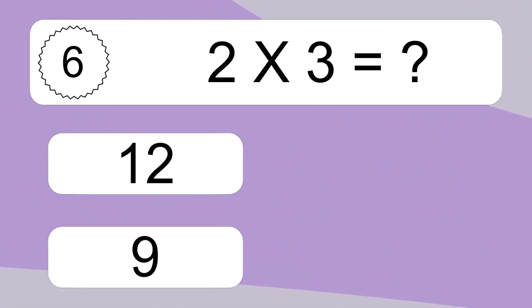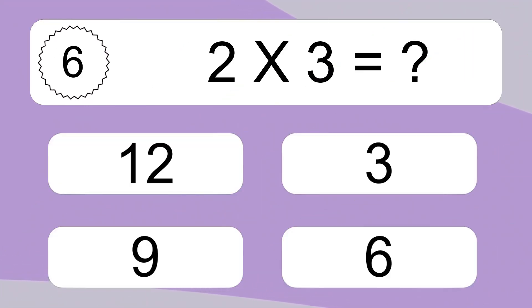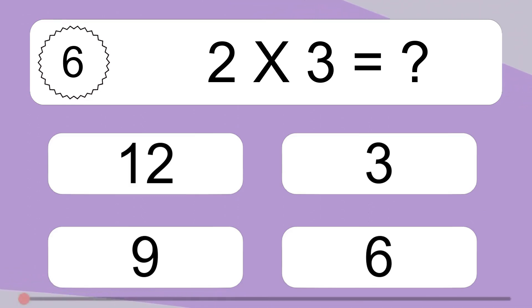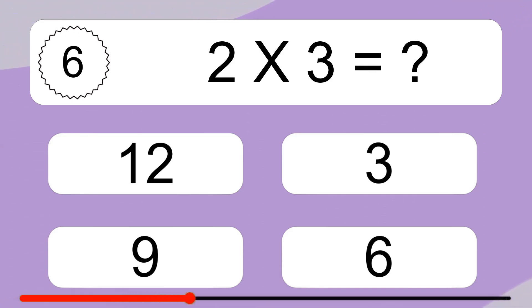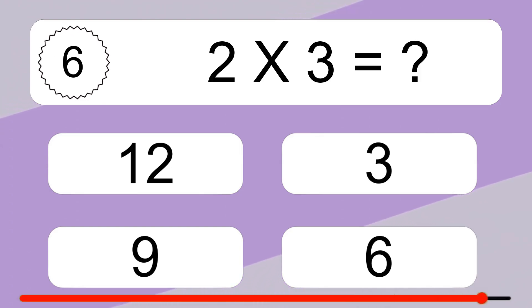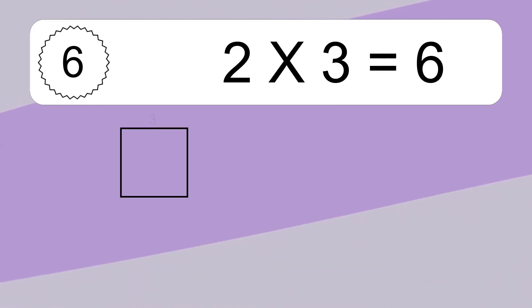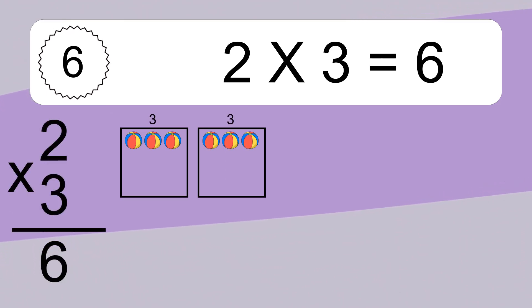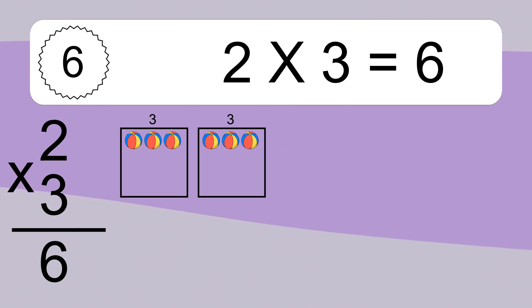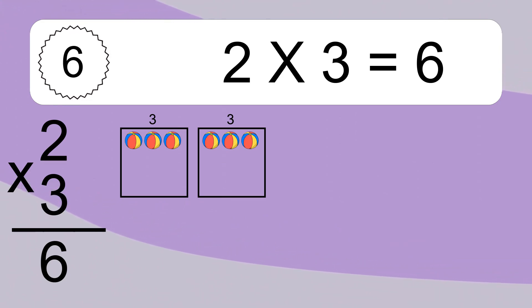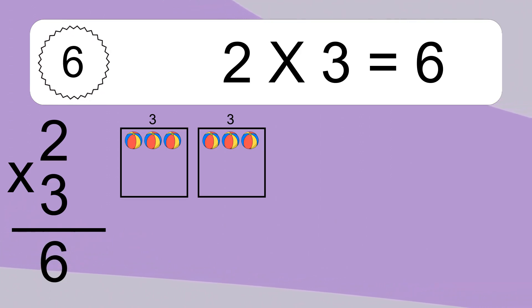2 times 3 equals what? We have 2 boxes, and each box has 3 colorful balls inside. If you count all the balls in all the boxes together, you will have 2 times 3 balls. This equals 6 balls.